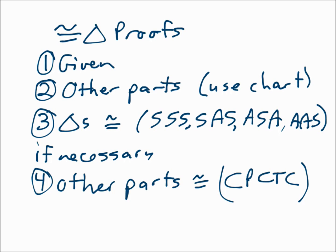Finally, if they ask you for proving parts congruent instead of triangles congruent, then you'll need step four. You will say that the other parts are congruent because corresponding parts of congruent triangles are congruent. If they want you to prove triangles congruent, stop at step three, but if you're proving parts congruent, go on to step four.